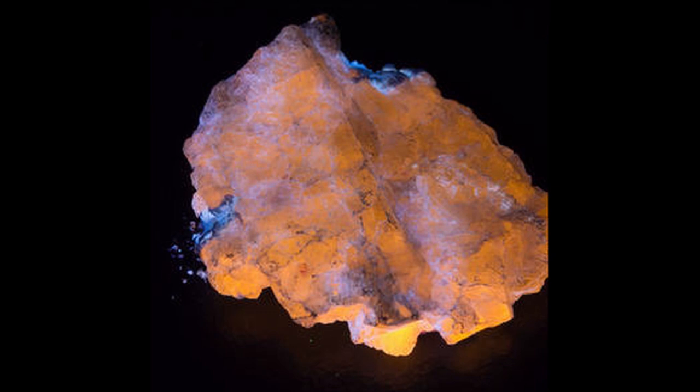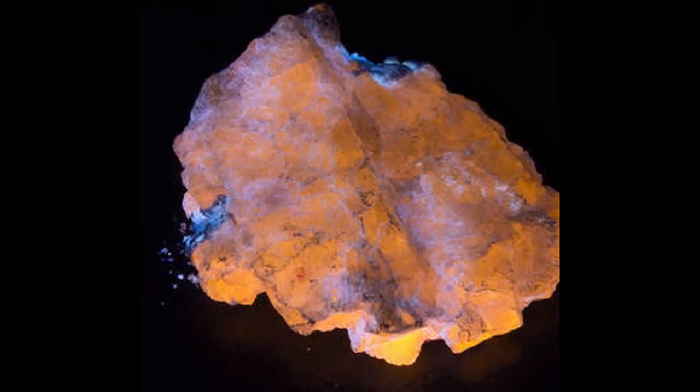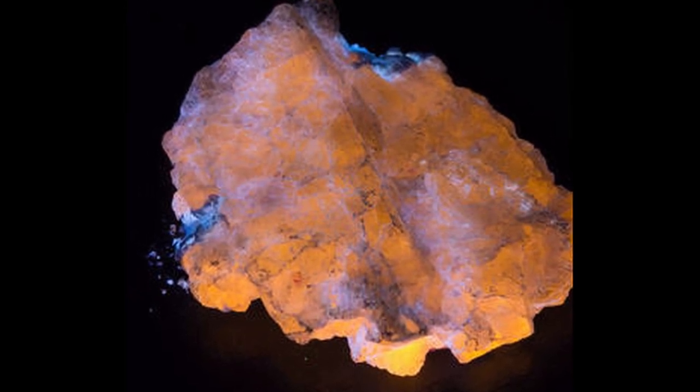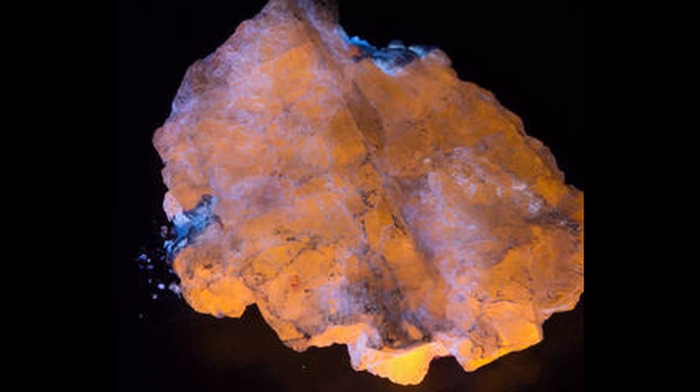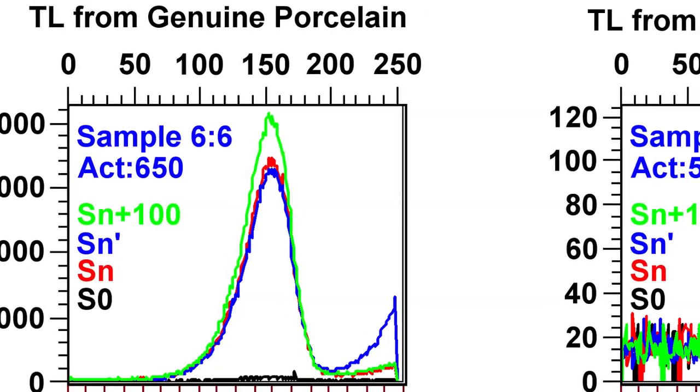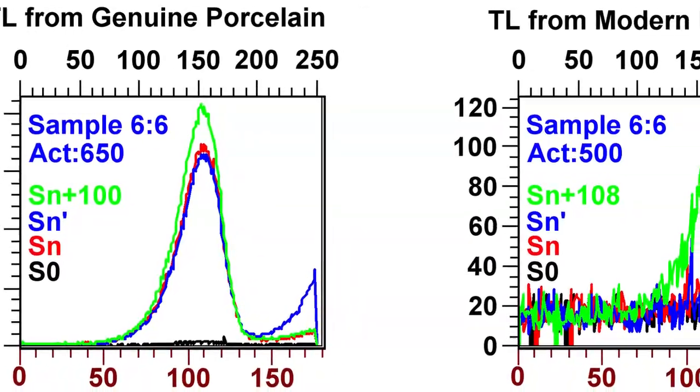When this material is sufficiently heated, the electrons gain enough energy to break free, clearing the entire artifact of these electrons entirely. Once this material cools, it begins capturing electrons again. This is referred to as being zeroed. The rate at which radiation bombards the sample is known as a dose rate, which is calculated by the rate of bombardment in the area at the time.